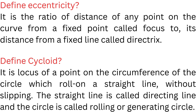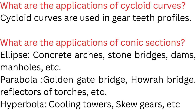Define Cycloid. A cycloid is a locus of a point on the circumference of a circle which rolls on a straight line without slipping. The straight line is called the directing line and the circle is called the rolling or generating circle. Cycloid curves are used in gear teeth profiles.